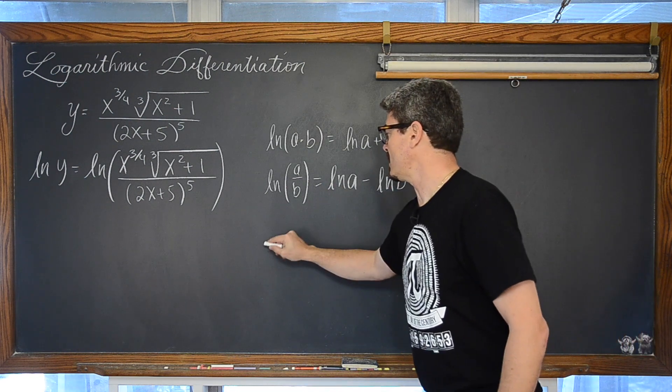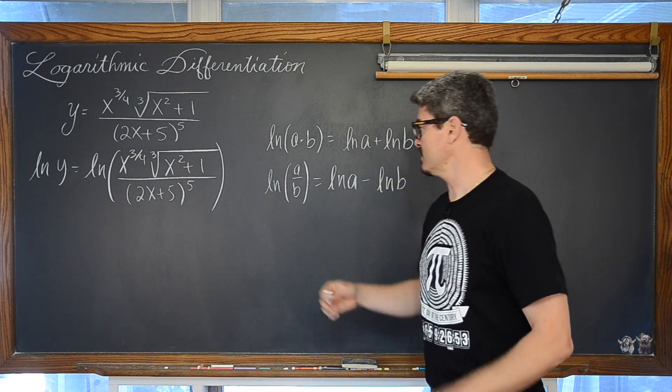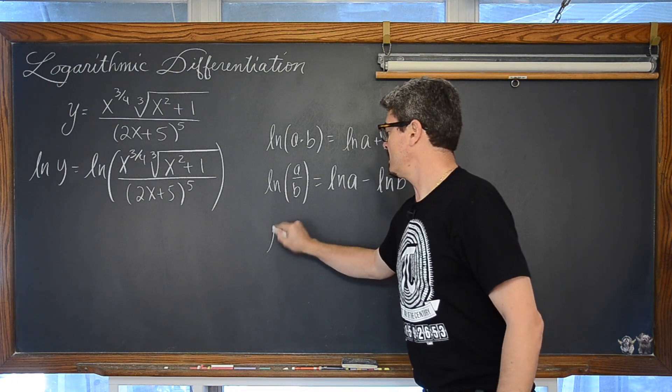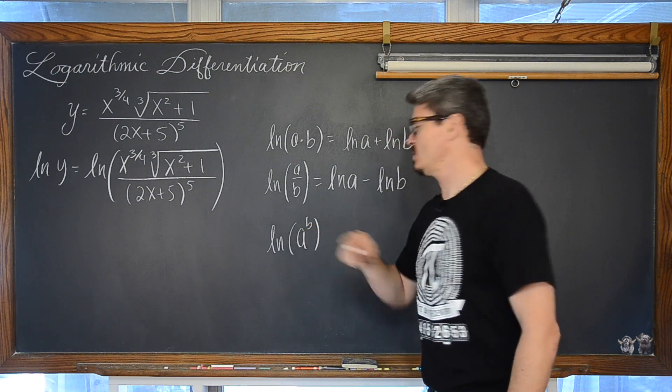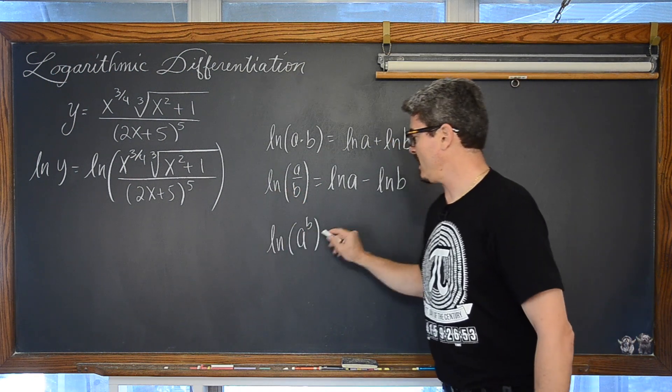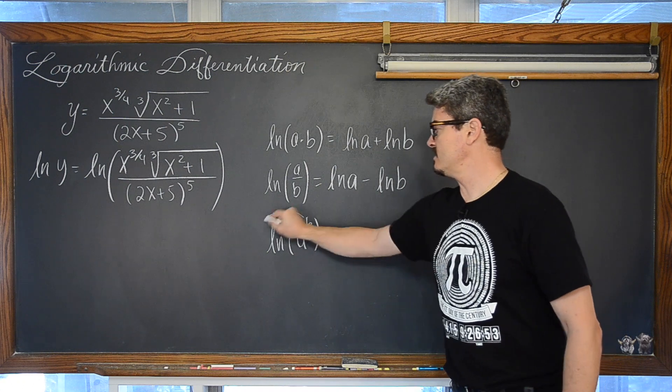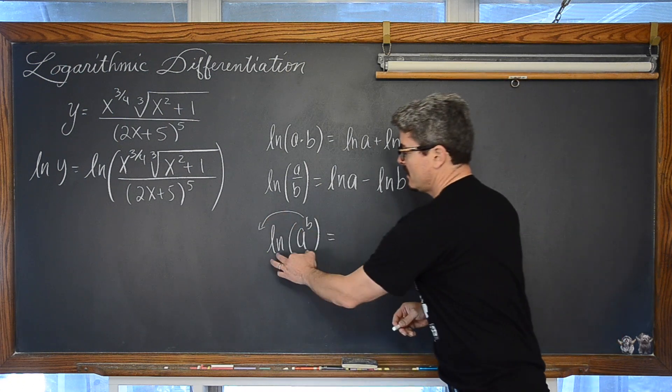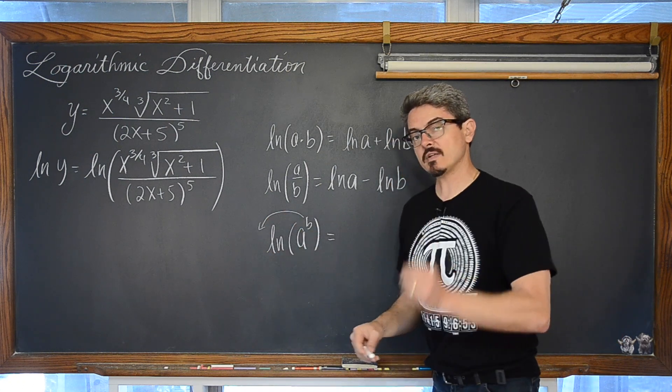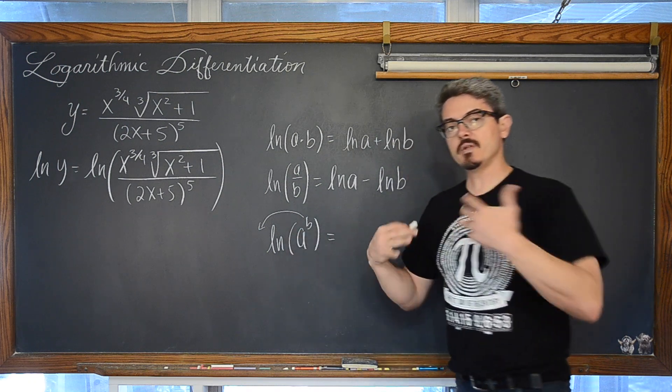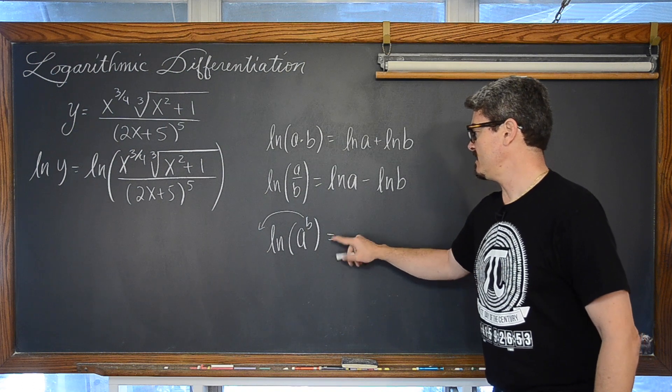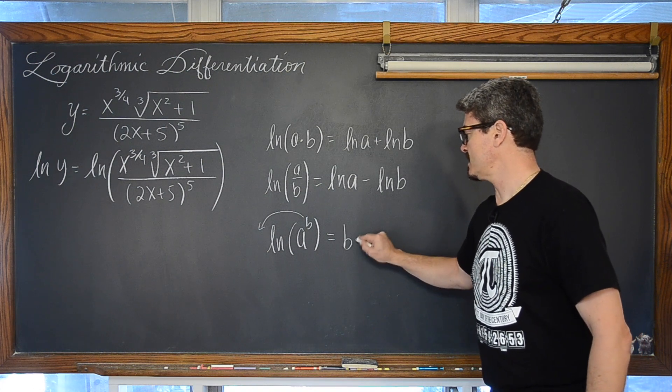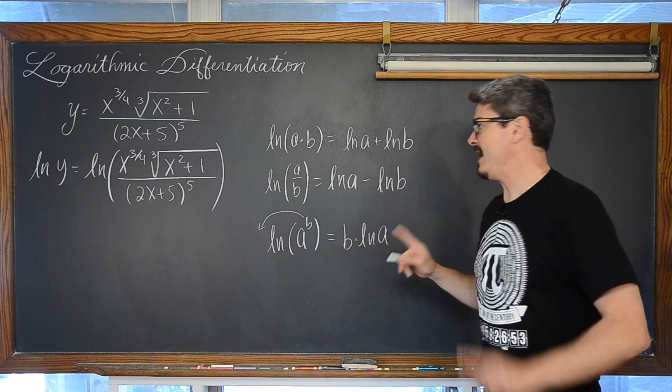And then our third property of natural logs, or really any logarithms, is when you take a log of something that is raised to a power, you can bring that power out front and change it into multiplication. Because remember, logarithms give you exponents and you effectively have an exponent raised to another exponent. So the power rule basically here is going to say that this is equal to b times the natural log of a.